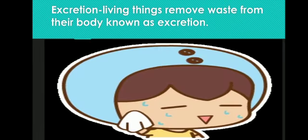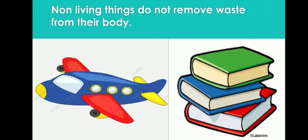The next difference is excretion. Living things remove waste from their body, which is known as excretion. Human beings remove waste from their skin; this process of removing waste from the body is known as excretion. Non-living things do not remove waste from their body.